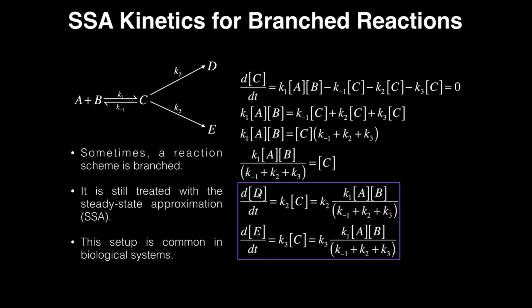So all I'm going to do to find these two rates, the rate of formation of D and the rate of formation of E, I'm going to plug this expression in for both Cs. So the rate of formation of D is equal to K2, which is from here, times this whole expression, K1 times A times B divided by the sum of these three rate constants.